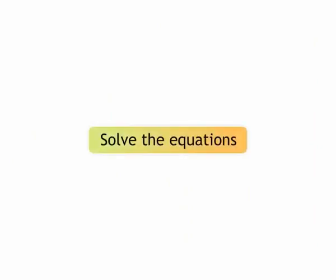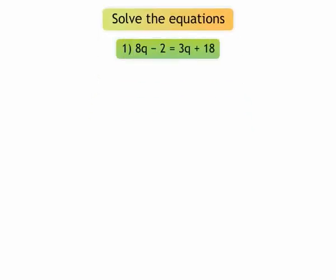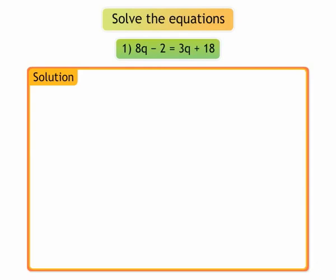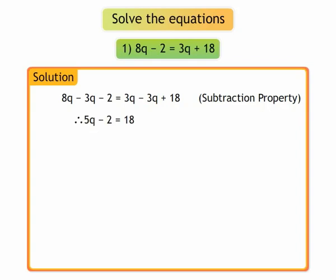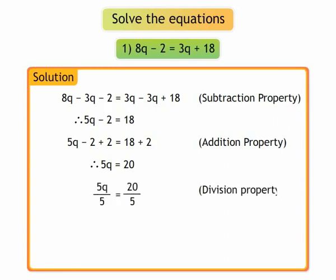Solve the equations. 1. Solve 8q minus 2 is equal to 3q plus 18. By using subtraction property, we get 8q minus 3q minus 2 is equal to 3q minus 3q plus 18. We get 5q minus 2 is equal to 18. By using addition property, we get 5q minus 2 plus 2 is equal to 18 plus 2. We get 5q equal to 20. By using division property, we get 5q upon 5 is equal to 20 upon 5. We get q is equal to 4. The solution to the equation is 4.